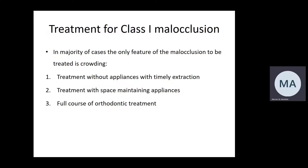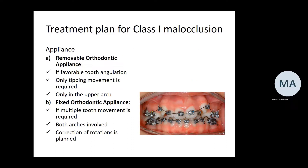In the majority of cases, the main feature to be treated is crowding. This could be treated without any appliance through timely extraction and spontaneous tooth movement, or with space maintainers, or with a full course of orthodontic treatment using removable or fixed appliances. Removable appliance is suitable when tooth angulation is favorable for simple tipping movement and the problem is only in the upper arch. Fixed orthodontic appliance is needed when multiple tooth movements are required, especially rotations and bodily movements, or when both arches are involved.